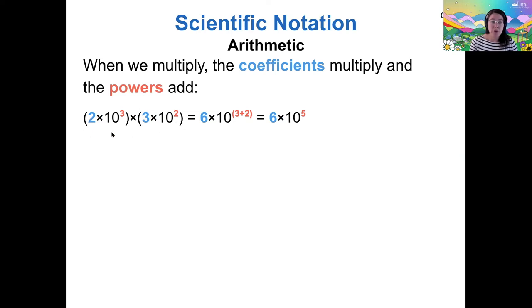then I multiply my coefficients, so 2 times 3 would give me 6, and I add my powers. So I end up with 10 to the power of 3 plus 2, or 10 to the 5. So this entire operation, 2 times 3 gives me 6. 10 to the 3 times 10 to the 2 gives me 10 to the 5. I end up with 6 times 10 to the 5.